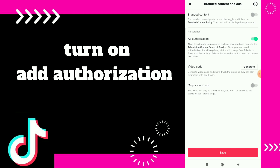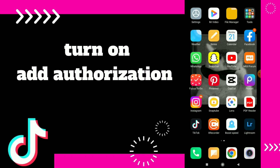This allows the video to be promoted, and you will have agreed to the Advertising Content Terms of Service. Once you turn on Ad Authorization, the video privacy status will change from Private or Friends to Available for Ads, so that the Ad Authorization team can review the video.